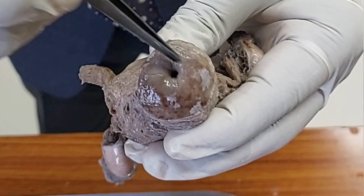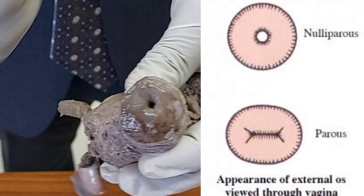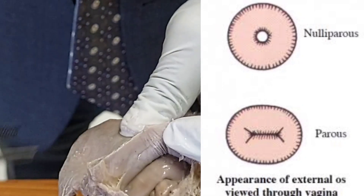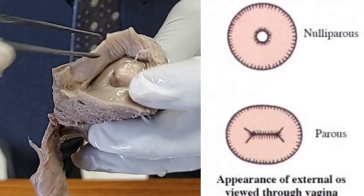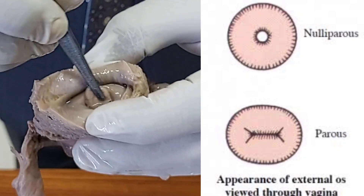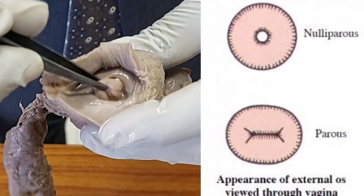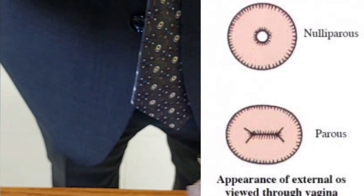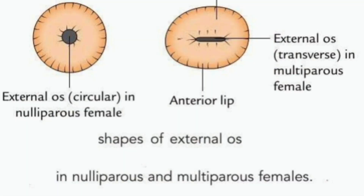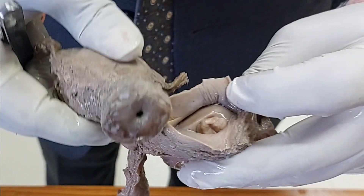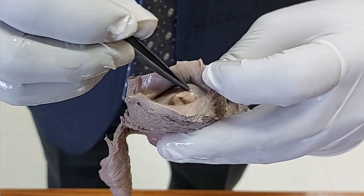The external os here is circular, which means this is a nulliparous uterus — no childbirth has occurred. If you look at this other specimen, the external os is not circular; it is a transverse slit. Just to compare: in the nulliparous uterus the external os is circular, and in the parous specimen it is a transverse slit.